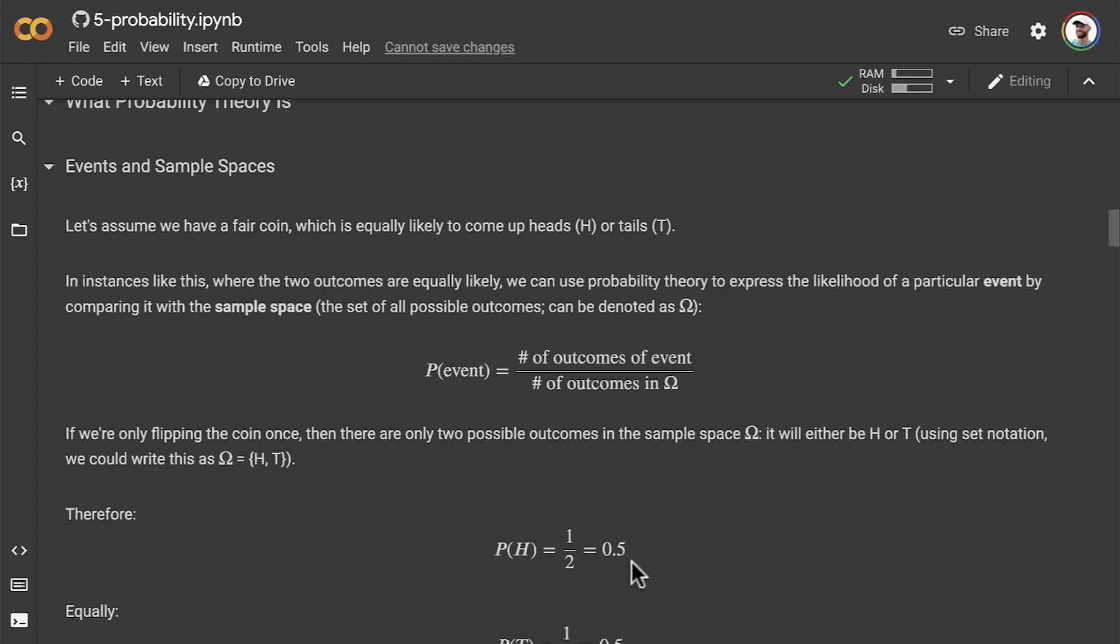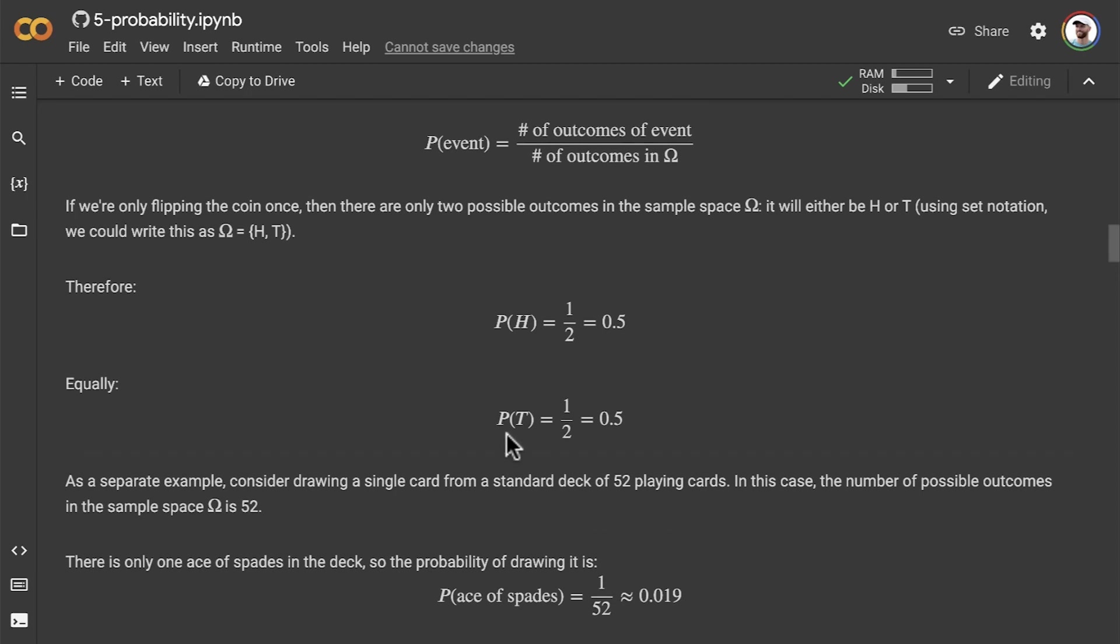Equally, the probability of tails is also 50% or probability of 0.5. Because again, there is only one outcome of tails out of our two possible outcomes. So one outcome that's tails out of our two possible outcomes, heads and tails. One in two gives us a 0.5 probability of tails, a 50% chance of tails.